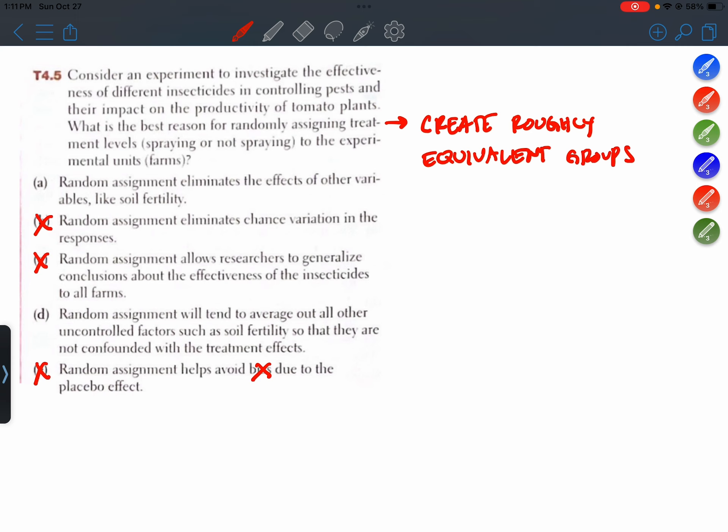So I like A and D. I made a comment about A, which is the word eliminate is a little bit too strong for me personally. I would have preferred it said random assignment reduces the effects of other variables like soil fertility.